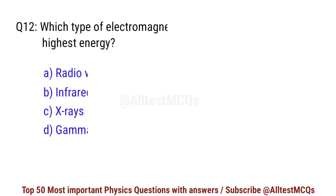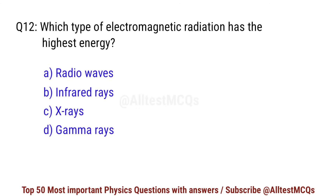Question No. 12. Which type of electromagnetic radiation has the highest energy? Right option is D. Gamma rays.